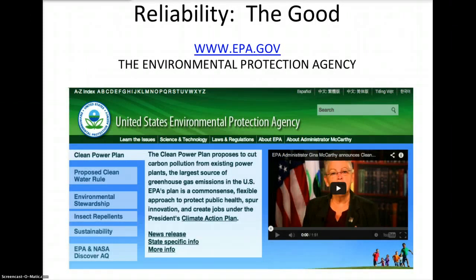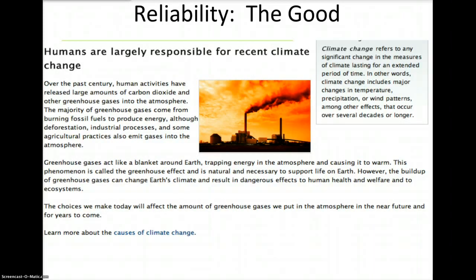Let's look at a website that has very good reliability. .gov sites are always a good source for reliable information. The Environmental Protection Agency, EPA.gov, gives very reliable information on all of the topics that they cover. For example, they have an article on climate change that gives you all sides of the issues, and also gives you independent links that you can check to verify whether the information is correct. So it has a very high degree of reliability if you were doing research on climate change.